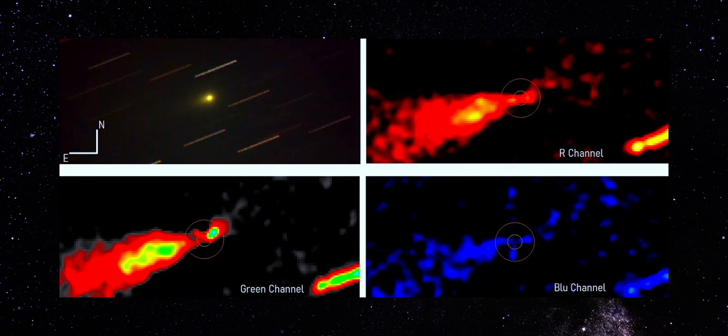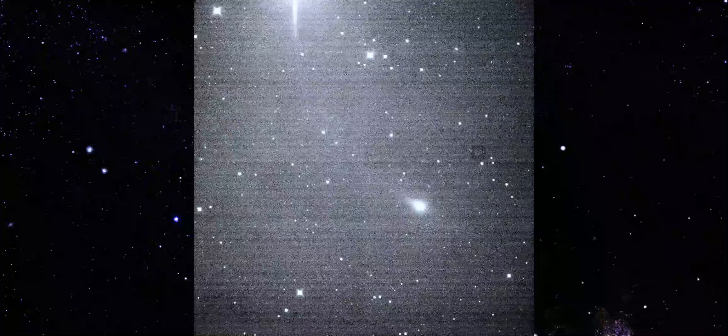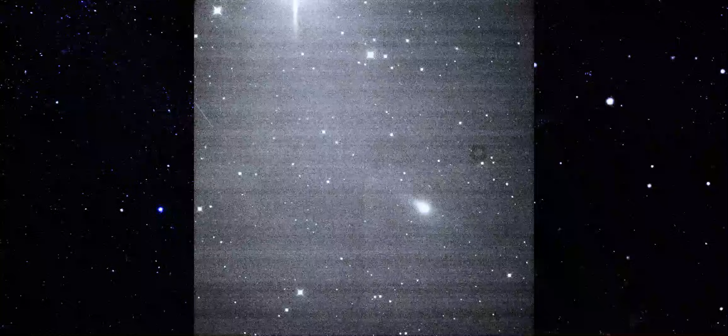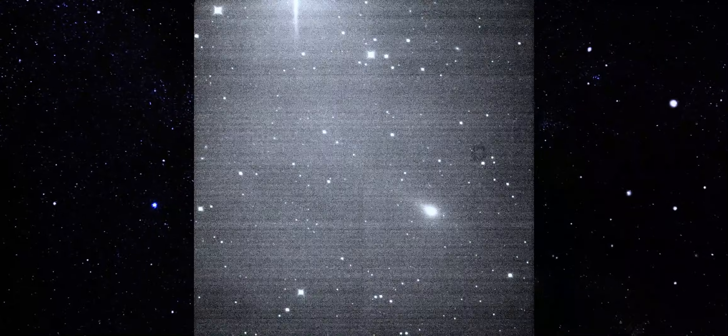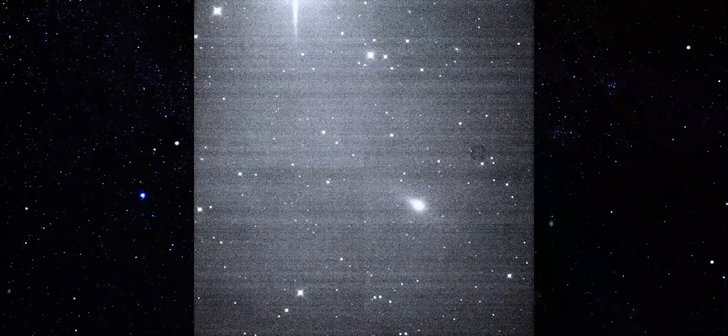Longer baselines are where false features usually die. This one survives. So now we have short amateur exposures, multi-channel filtered stacks, and a three-hour continuous time series all pointing to the same conclusion. The structure around 3i Atlas is persistent, not momentary.